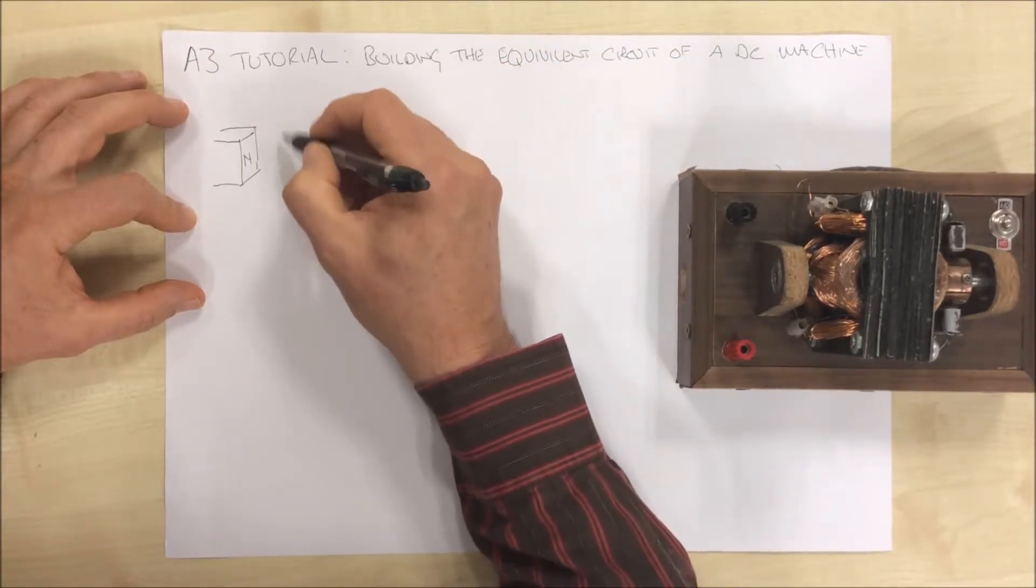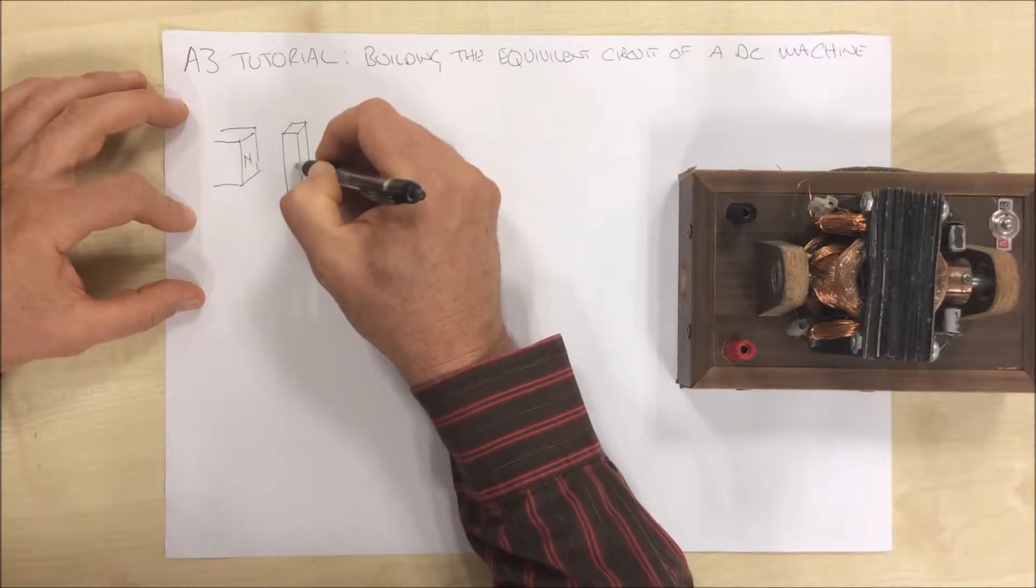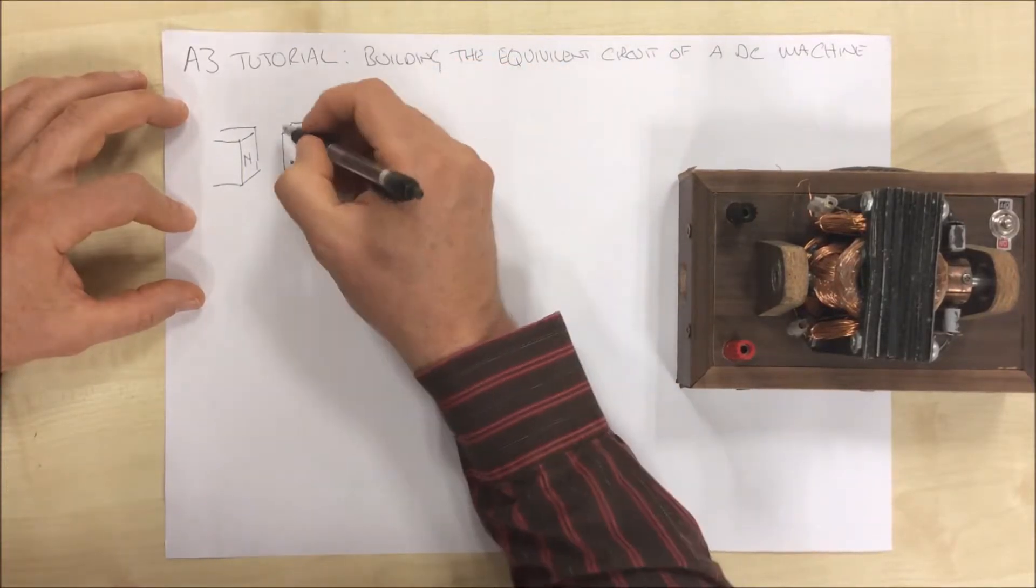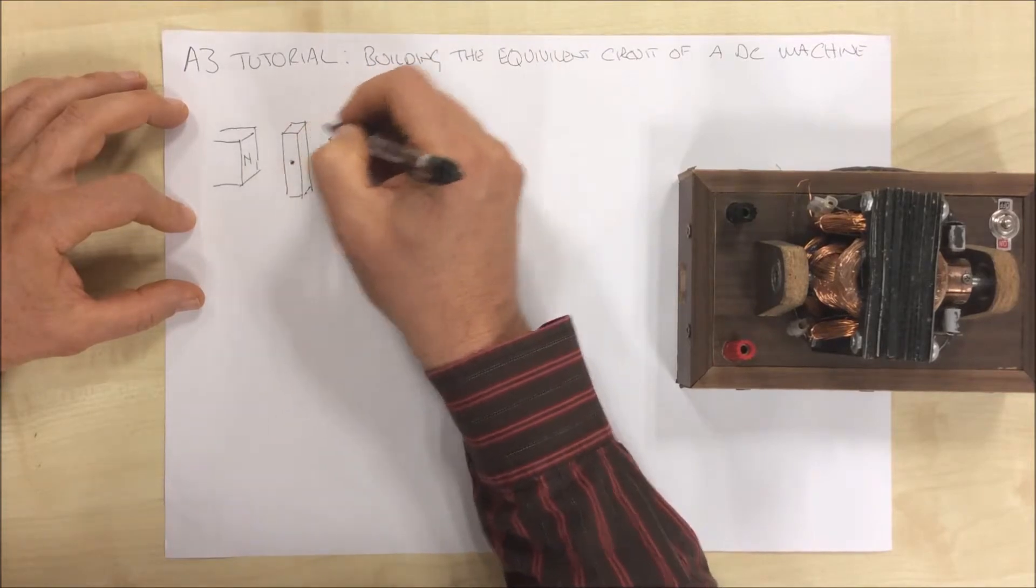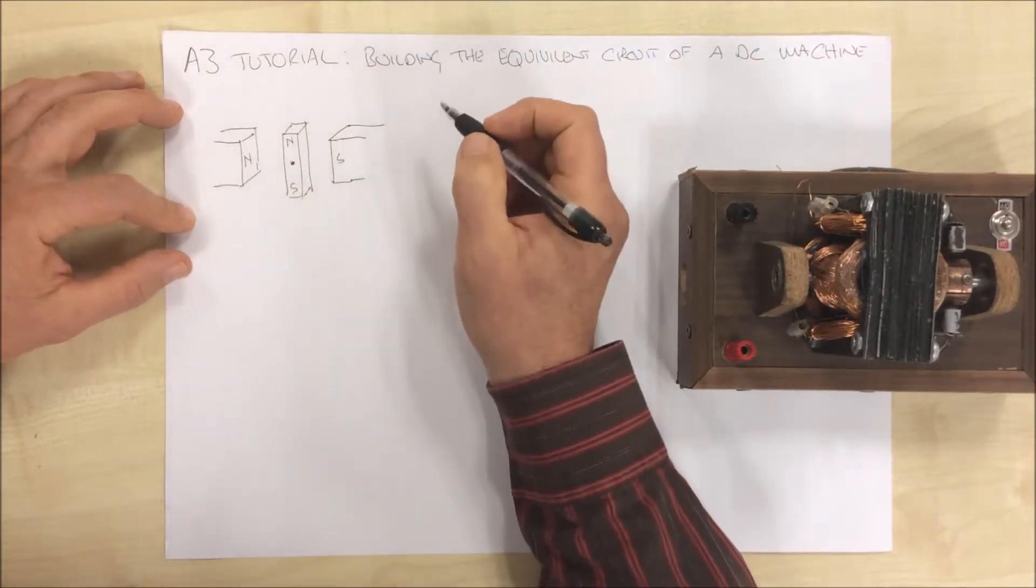And in here we have our armature, which we'll be doing our rotating. And we can configure it like that. It's stuck on an axis about here. And this is also a magnet. And that will be a north and a south there.